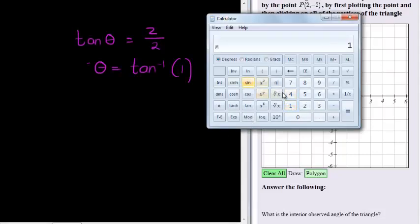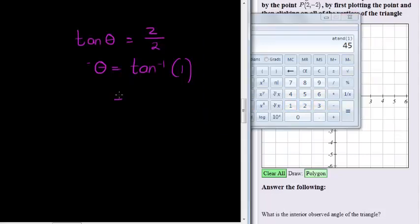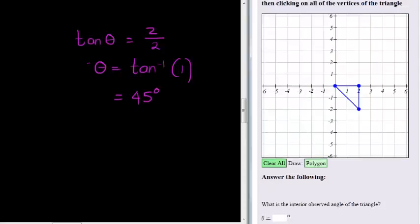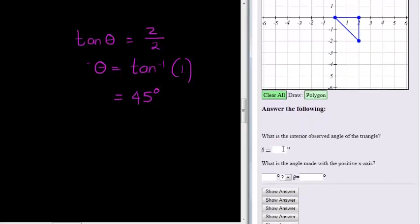Arctan of 1, using the inverse function, we get 45 degrees. So theta is actually equal to 45 degrees. This is a special angle, we'll come to it again later on.